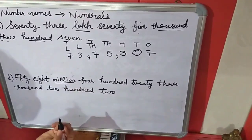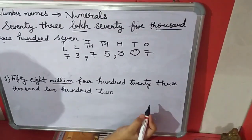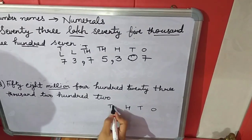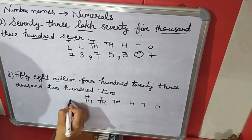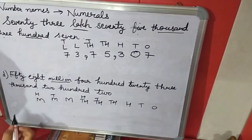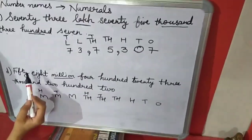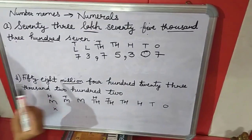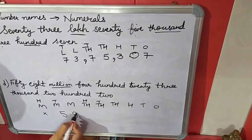Now we will take the next example. Here there is 'million,' and million comes in the international place value system. So we will draw the international place value system: 1s, 10s, 100, 1000, 10,000, 100,000, million. We have 58 million. There is no 100 million here, so 58 will come below 10 million and million — that is 58 million.